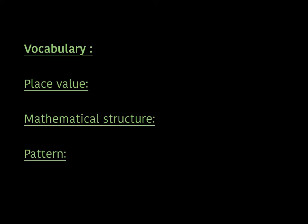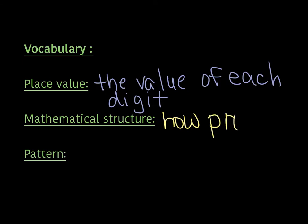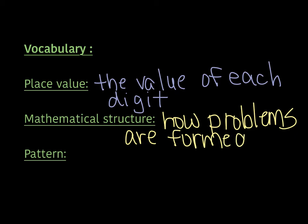To help us get through the lesson, we need to be familiar with three vocabulary words. The first is place value, which all of you should be familiar with because we defined this a few lessons back. Place value has to do with the value of each digit — we know the value of a number based on where that digit falls in the place value system. The second is mathematical structure. Structure means how something is built, and mathematical means it has to do with math, so it refers to how the problems are formed.